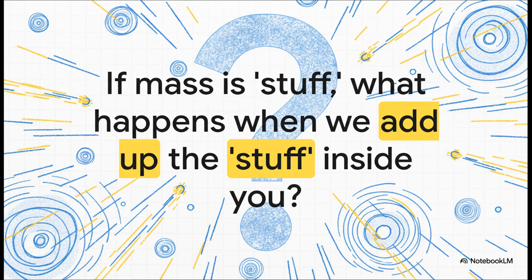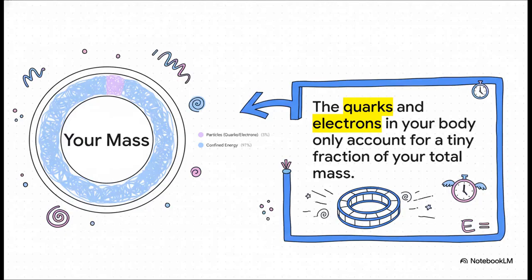Let's put this stuff idea to the test. Let's use ourselves as the experiment. You're made of fundamental particles, quarks and electrons. So if your mass is just the sum of all that stuff, the numbers should add up perfectly, right? And this is where it gets absolutely wild. If you take every single fundamental particle in your body, every quark, every electron, and you add up their mass, you only get a tiny fraction of your total mass. We're talking like 1 to 5% maybe. So where's the other 95% of you?